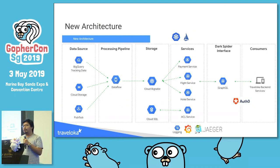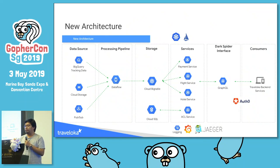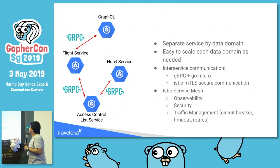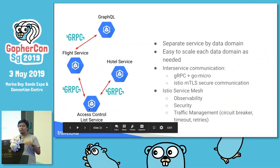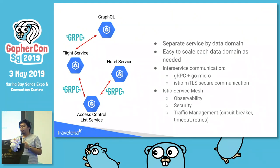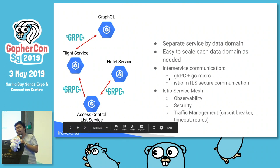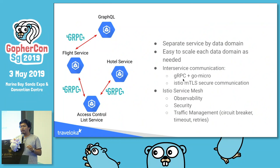Everything is deployed in Kubernetes with Istio. We use monitoring tools like Grafana, Jaeger, and Google Cloud Platform monitoring. The GraphQL gateway talks to flight and hotel services to get data, and inter-service communication uses gRPC. We also use GoMicro as our microservices framework, and Istio mTLS for secure inter-service communication.